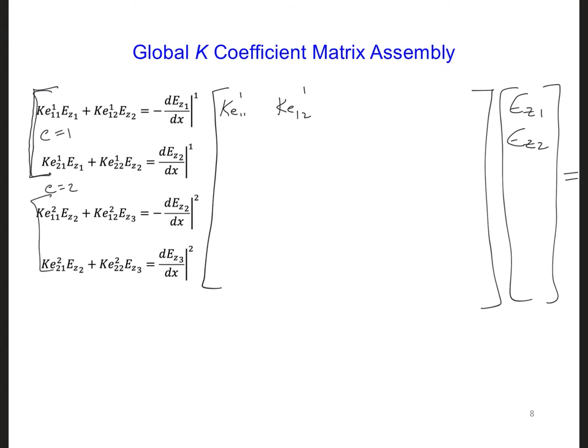Then for the second equation here, we have Ke 2,1,1, and Ke 2,2,1. So this one's multiplied by Ez 1 and this one's multiplied by Ez 2.